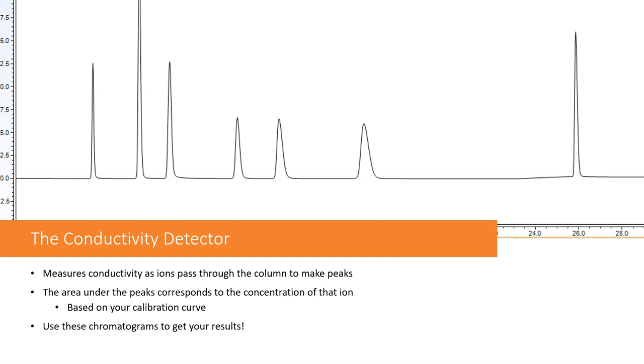We'll talk about how to make that in the next video. You use these chromatograms to get your results, so your area corresponds to a concentration, and the Chromelion software will automatically make an Excel file that you can use to analyze your data.